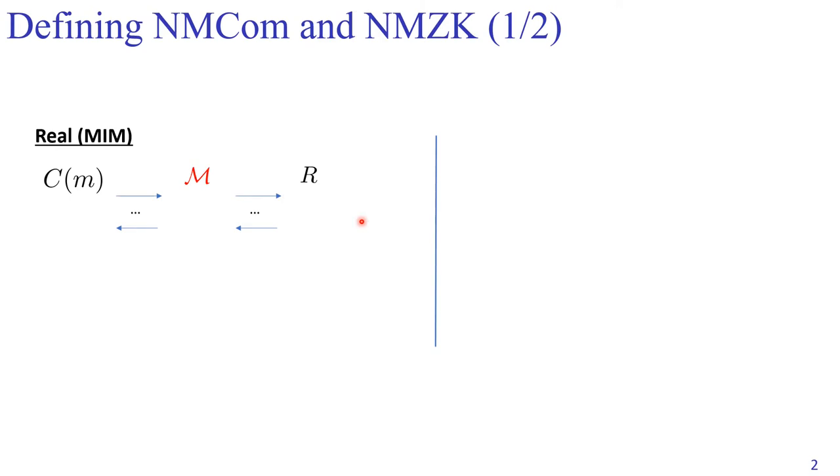What non-malleable commitments want to achieve is that the value committed by this adversary M in the right session should be independent of the value committed by the honest committer C in the left session.